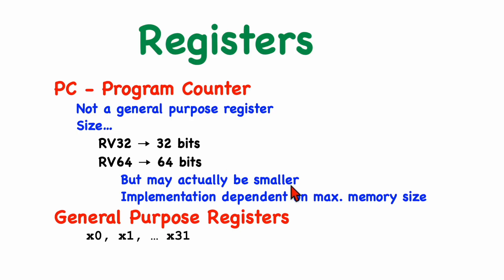Actually, the program counter might be slightly smaller than this. If memory size doesn't require all the bits, then the upper bits may not actually be implemented. And that's particularly true for 64-bit systems. In addition to the program counter, we have 32 general purpose registers, which have names X0, X1, and up to X31.